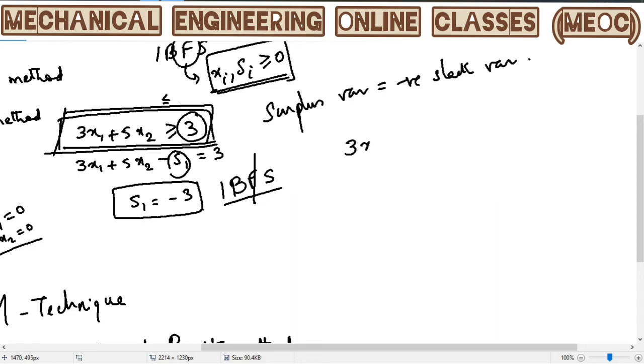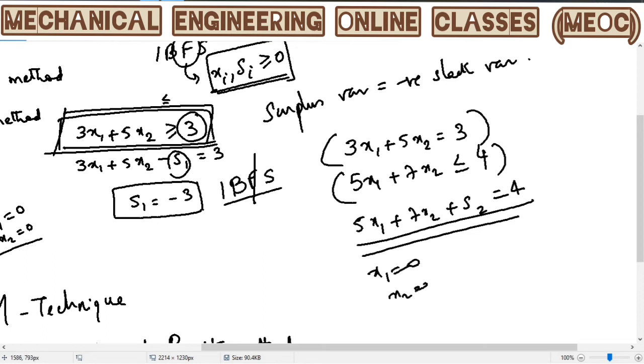Now, in case the question has come something like, the constraint is this. This is say one constraint, another constraint is something like this. These are the two constraints. Now, when we have to write the standard form. This I cannot, there is no slack or surplus variable here. But here, there is 5x1 plus 7x2 plus some s2 is equal to 4. So, x1 is equal to 0, x2 is equal to 0, S2 is 4. So, this is an IBFS. S2 is 4, which is 0 or more, that non-negativity restriction is satisfied. This constraint is satisfied.